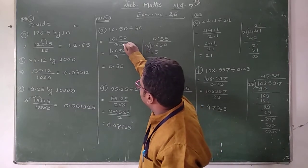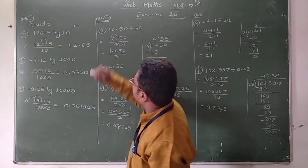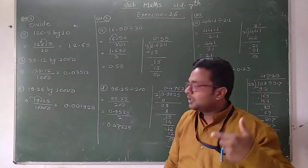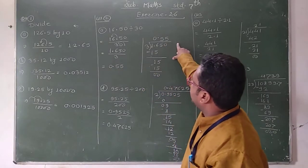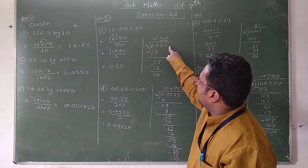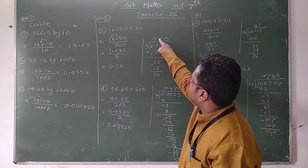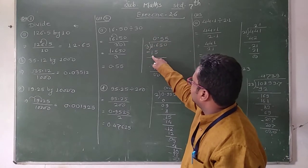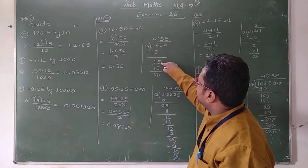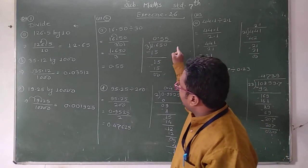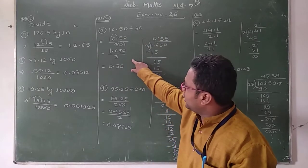We can say the decimal point is shifted one digit, so in numerator and denominator we do the same process. Then we get 1.650 divided by 3. Now we do the division: 1.650 divided by 3. 1 is not divisible by 3, therefore 0. Then 16: 3 fives are 15, remainder is 1. Then we take the next number 5: 3 fives are 15, division is complete. The answer is 0.55.